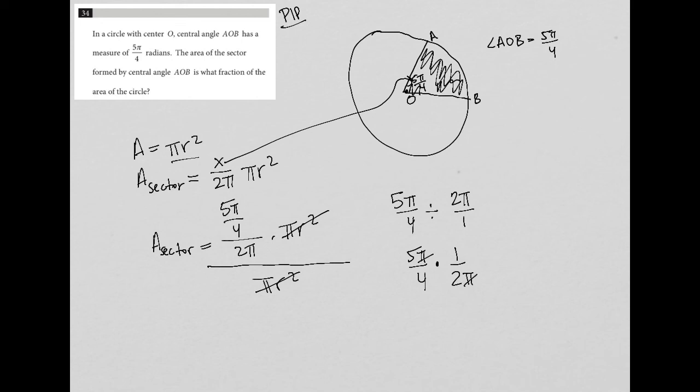That gets rid of the π's here. So I'm left with 5 times 1, which is 5, over 4 times 2, which is 8. So 5/8 is the answer to this question.